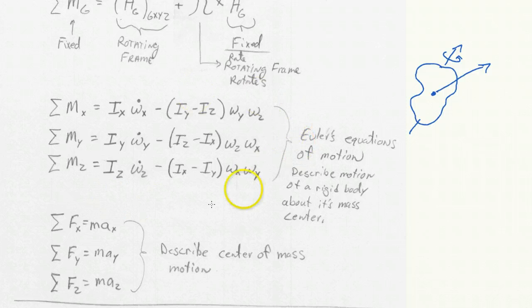And then these other three, Euler's equations of motion, describe the motion of the body about its mass center. So in this case, it's just rotating and we could get that out of there. So, these six equations completely describe the motion of a three-dimensional rigid body moving through space.